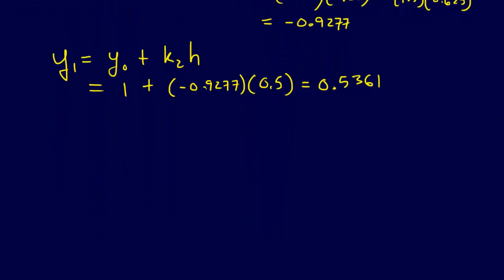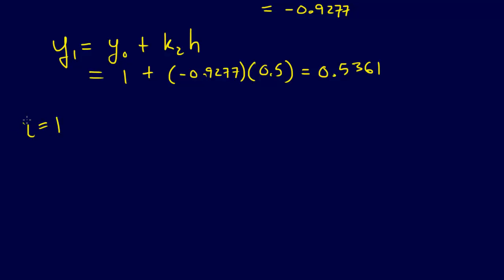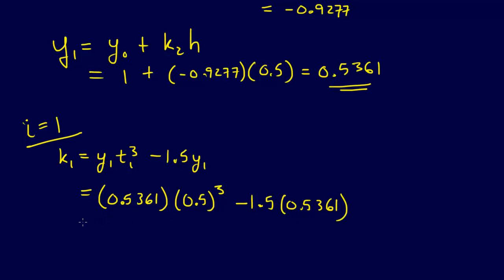Now we can continue on with the process. We're going to have to say that i equals 1, and for i equals 1, we've got to again calculate our K1, so our K1 is equal to Y1 T1 cubed minus 1.5 times Y1. This is our Y1, we're going to have to use that in the next set of calculations. So that K1 is going to equal 0.5361 times 0.5 cubed minus 1.5 times 0.5361, and that is going to be equal to negative 0.7372.